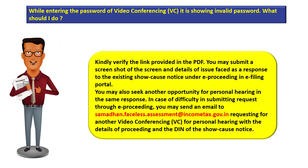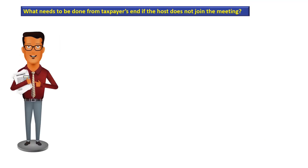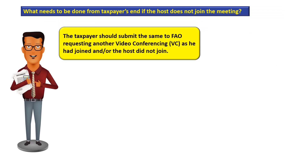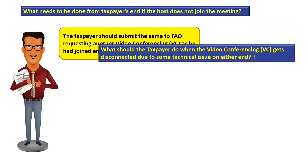Some taxpayers may face a situation where the host does not join the meeting. In case the host is not able to join, the taxpayer should submit a request to the faceless assessing officer requesting another opportunity for video conferencing, citing that the host could not join.